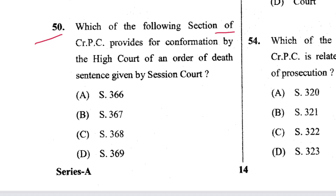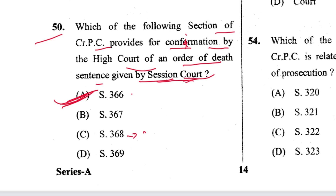Question 49 (50): Which section of CrPC provides for confirmation by the High Court of a death sentence given by the Sessions Court? That is Section 366. A is the answer. This is a controversial question — several states give 368, but Section 366 covers submission of the order before the High Court, while Section 368 covers confirmation. A is the answer.